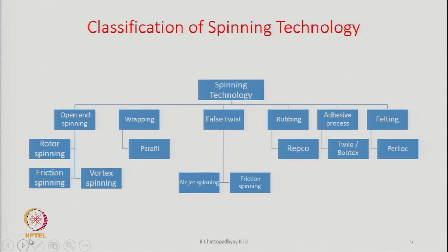Then by the process of rubbing, the technology which is commercially known as REBCO spinning system is mostly used for wool fibers. Then the adhesive process that has been developed is known as the Twilo or Bob-Tex spinning system, and the felting technology that we have is known as Peri Lock — that is the name of the spinning system, Peri Lock.